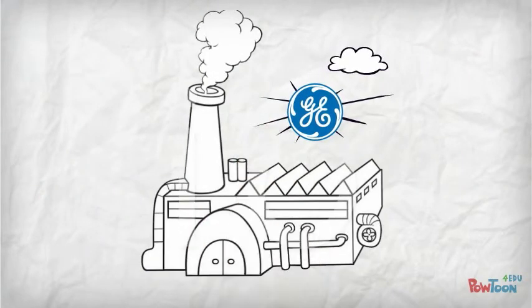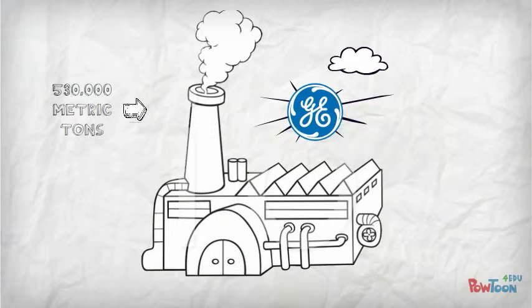By replacing insulation agents in fridges with cyclopentane foam, GE reduced their carbon dioxide emissions by more than 530,000 metric tons. This is equivalent to the annual greenhouse gas emissions of 110,000 cars. This replacement at GE's manufacturing facility in Decatur reduced GHG emissions by more than 80%.